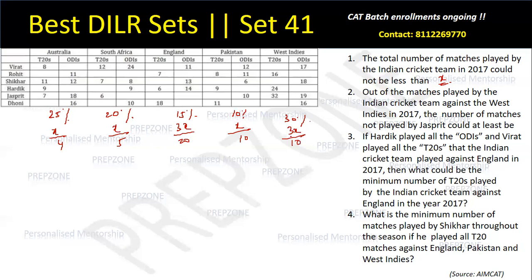These numbers of matches have to be integers. So x/4 and x/5 must both be integers, which means x must be a multiple of both 4 and 5 — so x must be a multiple of 20. If x is a multiple of 20, then 3x/20, x/10, and 3x/10 will also be integers. So x has to be a multiple of 20.